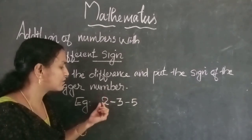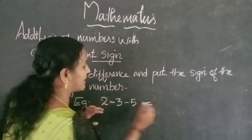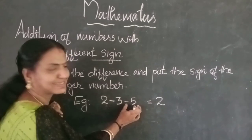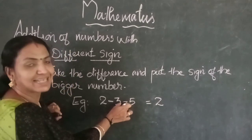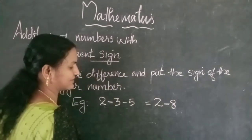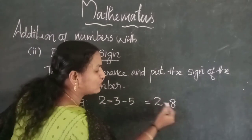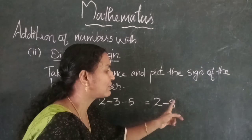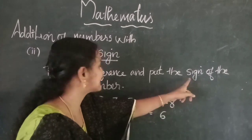Here the first number is 2 (positive). Then minus 3 and minus 5 — these have the same sign, so add them: 3 plus 5 is 8, and the sign is minus, giving minus 8. So we have 2 and minus 8. The signs are different, so take the difference: 8 minus 2 is 6, and put the sign of the bigger number.